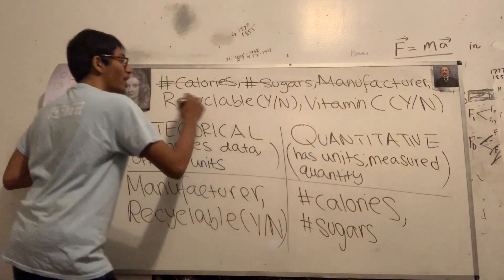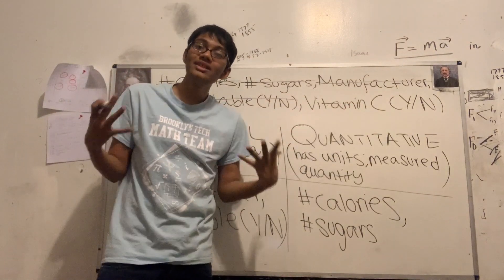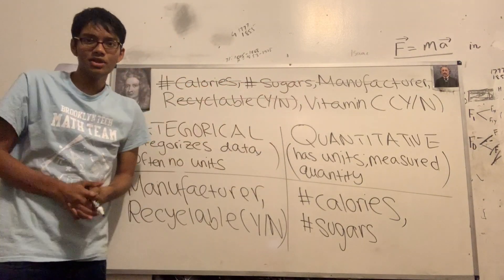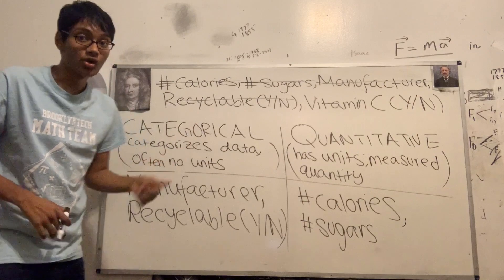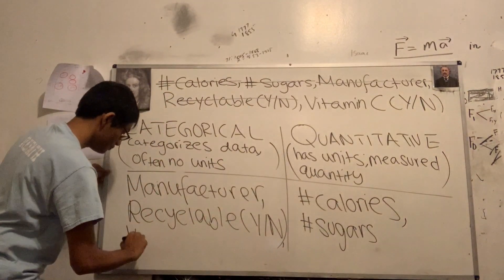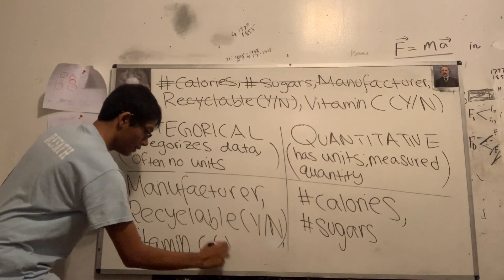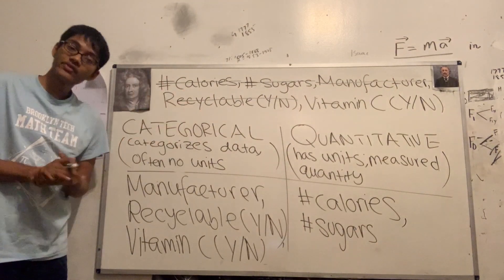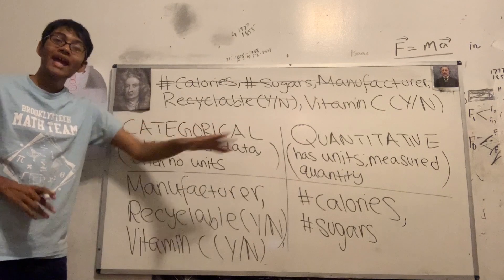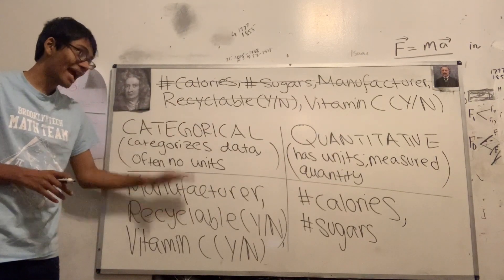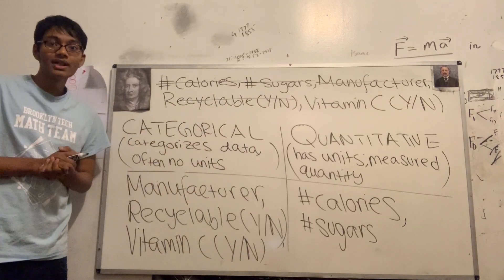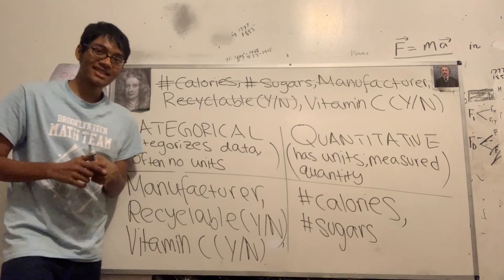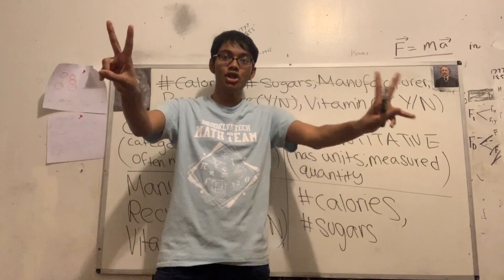And finally, does the cereal have vitamin C or not? If it does, it falls under one column; if it doesn't, it falls under the other. You can probably guess where this is going — it's going to be categorical. Now we've categorized all five variables as either categorical or quantitative. If I just collect some data on these variables, I'll be sure to know which cereal is healthiest. Thanks for watching, and we'll see you next time. That concludes lecture number two of statistics.